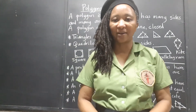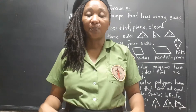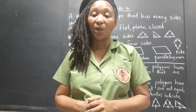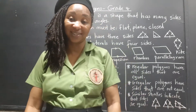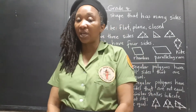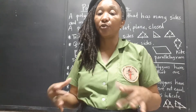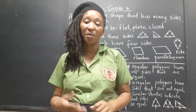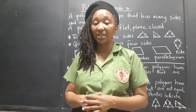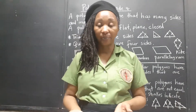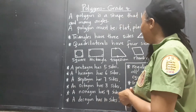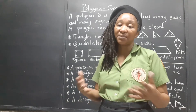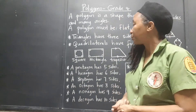Hi scholars, welcome back. Today we're looking at polygons, continuing our study of basic geometry. Polygons is a Greek word with two roots: 'poly' meaning many, and 'gon' meaning angle. So polygons have many angles, which also means many sides.